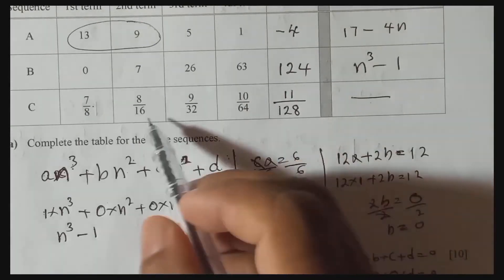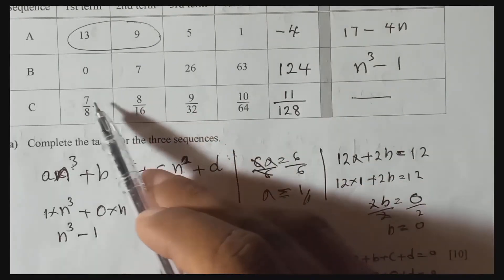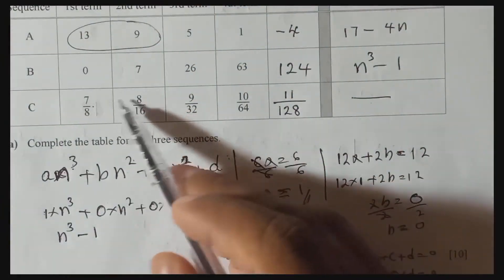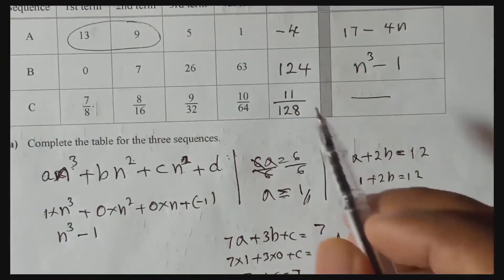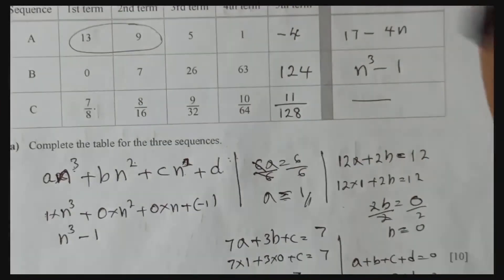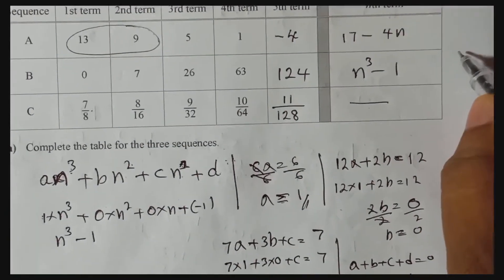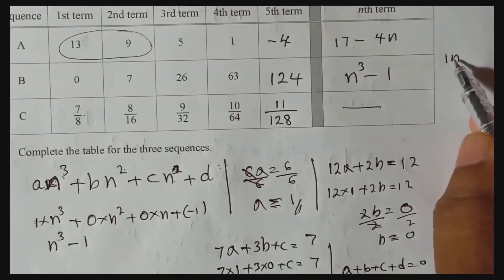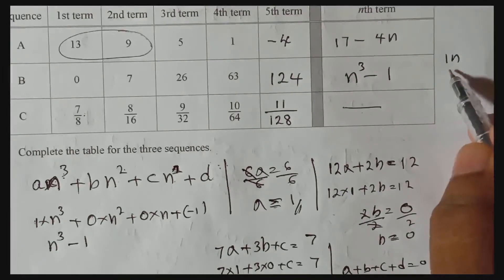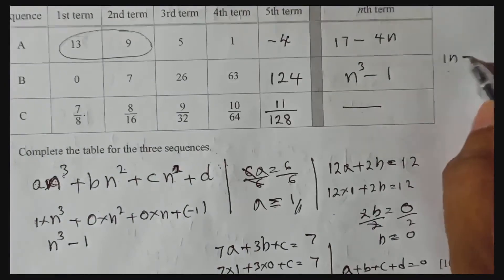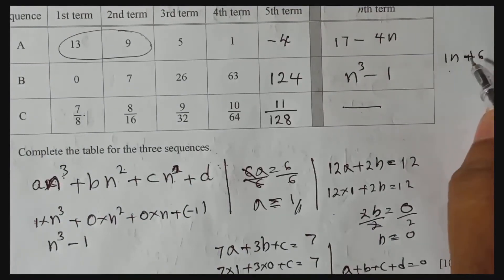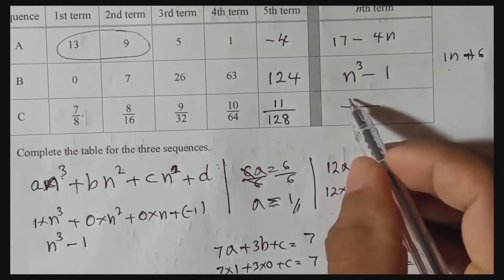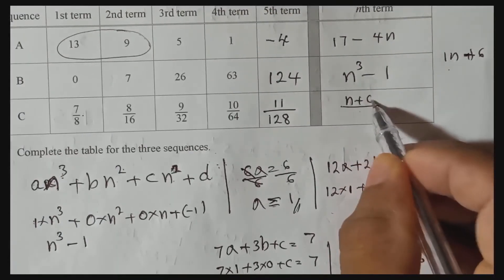I'll show both methods here. The difference between terms in the numerator is 1, so the common difference is 1. Putting 1 times n, and replacing n with 1 gives 1. To reach 7 we need to add 6. So the nth term of the numerator is n + 6.